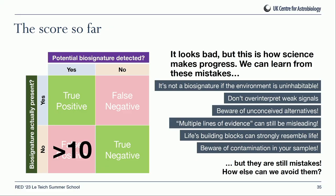There are many more examples I could give, but let me draw the key lessons. It's not a biosignature if the environment is uninhabitable. Don't over-interpret weak signals. Beware of unconceived alternatives — hypotheses you haven't considered. You can have multiple lines of evidence that look like life and still be wrong. The building blocks of life and non-biological organic molecules can look a lot like life. And beware of contamination in your samples.